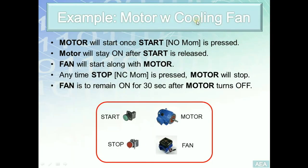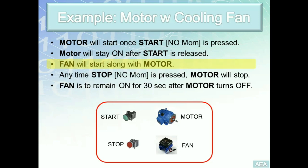In this example called 'Motor with Cooling Fan,' we have two discrete inputs: Start and Stop. Our program will control two discrete outputs: Motor and Cooling Fan, to fulfill five requirements. The first: the motor will start when Start is pressed and stay on once released. The fan will start along with the motor — they should start together. When Stop is pressed, the motor only will stop immediately.